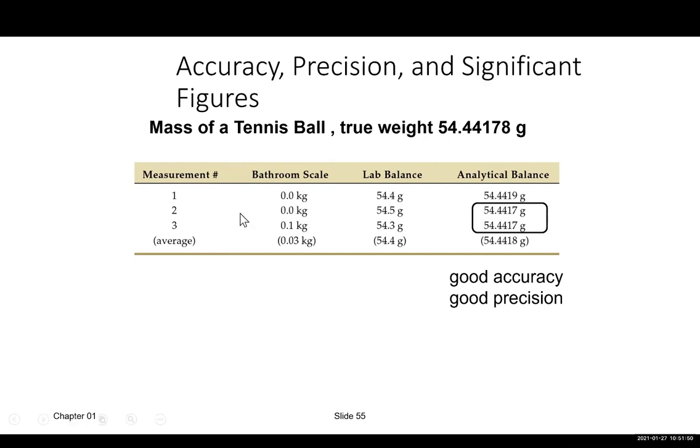And then in second measurement, zero bathroom scale, zero kilogram measured by bathroom scale. Lab balance is showing a weight of 54.5 grams. Analytical balance, which is digital, much more sensitive and accurate, is giving you 54.4417 grams.